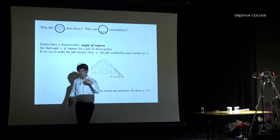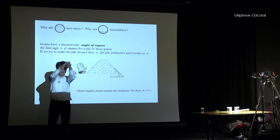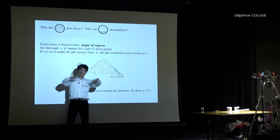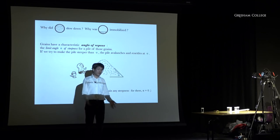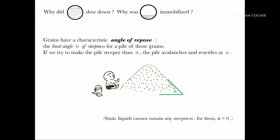This angle of repose doesn't depend on the size of the grain — if you have small or large grains of the same shape, you always get the same angle. For liquids, the angle of repose is always zero because a liquid cannot sustain any steepness. Proof that it doesn't depend on grain size: if you look at a sand pile from very far away the grains look small; if you look close they look large; but it's always the same angle. QED.